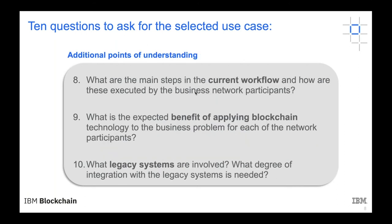The ninth question is: if we go ahead and implement this blockchain solution, what value will participants get? How will they leverage the solution? The tenth question is: what are the legacy or underlying systems involved? We discussed events last week in terms of how systems communicate — we need to identify existing systems we need to tap into. Those are the ten questions you can ask, in addition to the pragmatic tests, to evaluate whether a blockchain solution is appropriate.